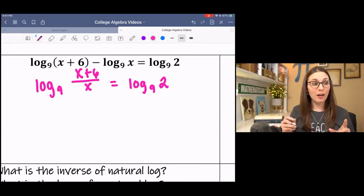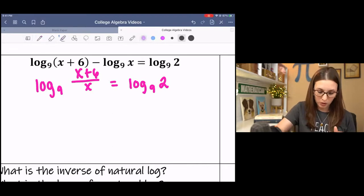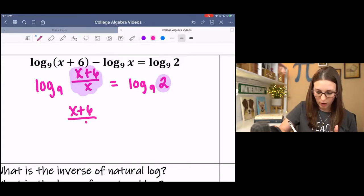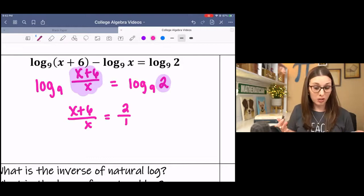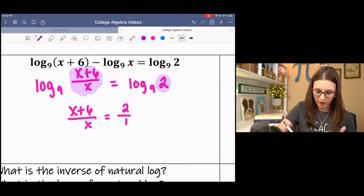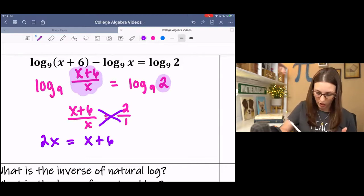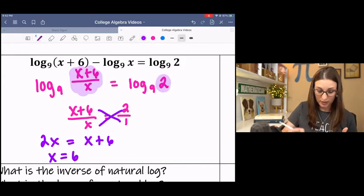Now we have consolidated logs with the same base, which means that we can focus on those pieces there. So we have x plus 6 over x equals 2. You can write this over 1 if you want, because what's going to happen is we can cross multiply. 2 times x equals 1 times x plus 6, and then solve. Subtract x, and we get 6.